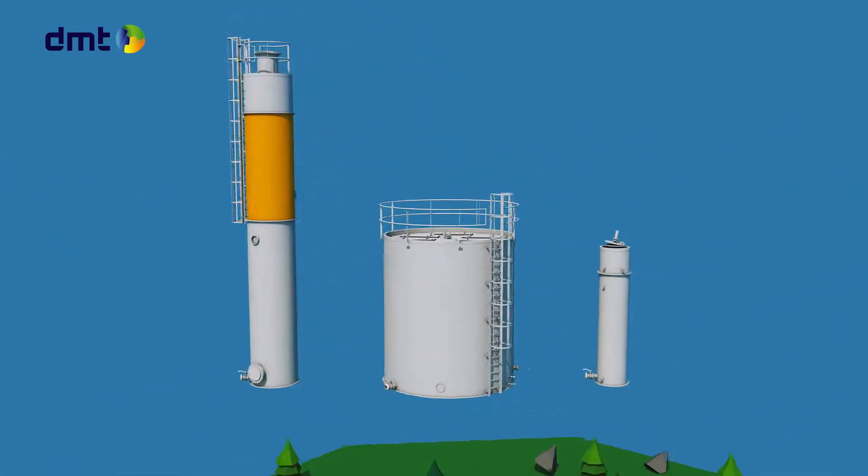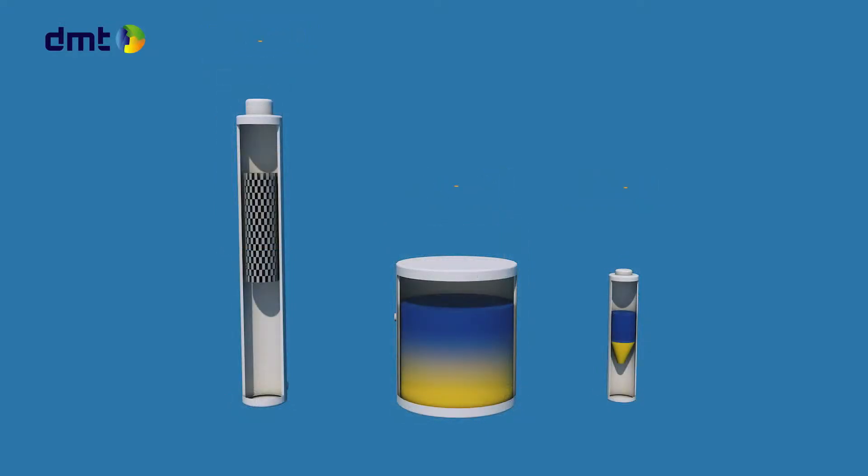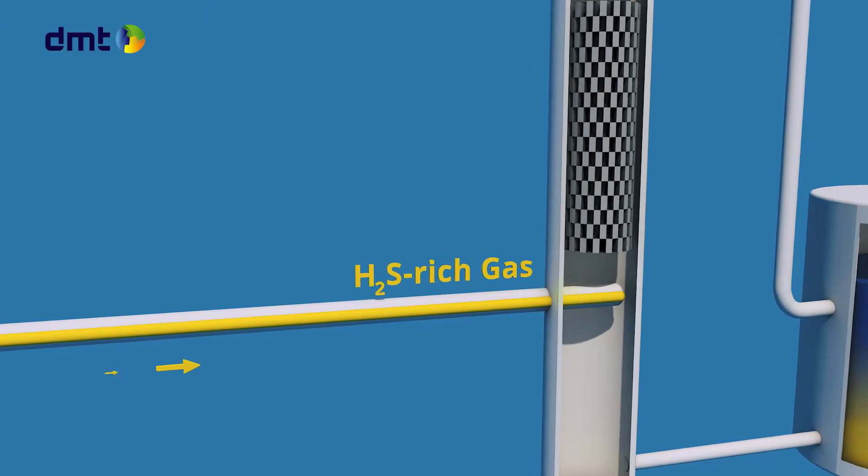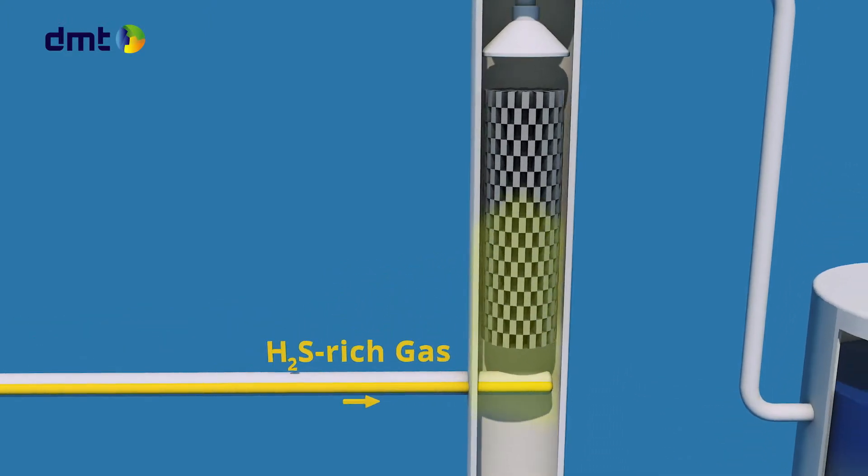The process is divided into three sections. The absorption section: hydrogen sulfide rich gas enters the absorption section of the system and streams upwards.